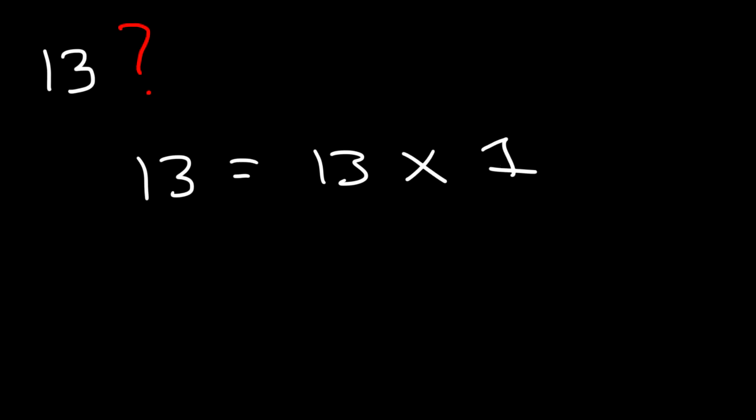Now let's try another example. What about 13 — is it composite or prime? Can you think of two whole numbers that multiply to 13 that does not include 1? I can't think of any. The only factors of 13 are 13 and 1. So therefore, 13 is a prime number.